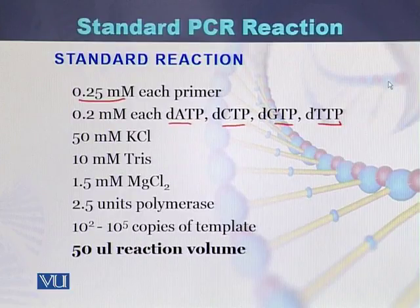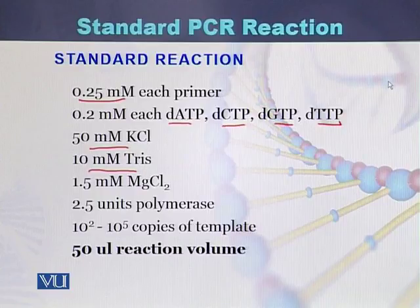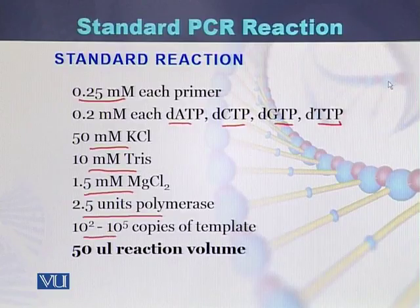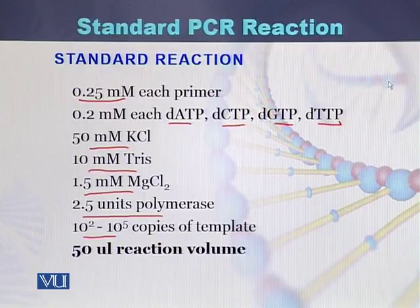Additional ingredients include 50 millimolar of KCl, 10 millimolar of Tris which is usually used as a buffer, 1.5 millimolar magnesium chloride, 2.5 units of the DNA polymerase, and 10² to 10⁵ copies of the template. These are the main ingredients and their amounts required to perform a standard PCR reaction.